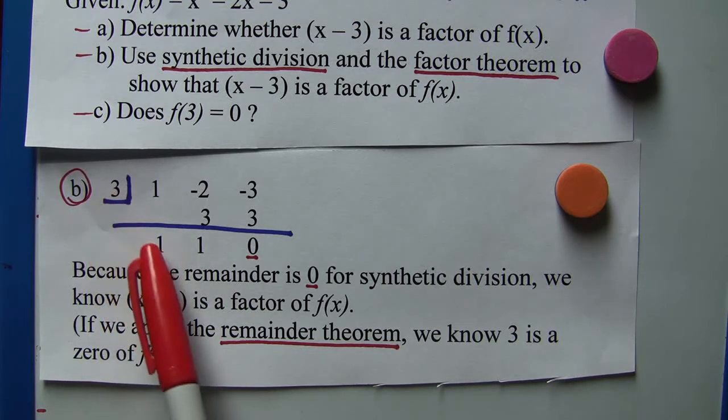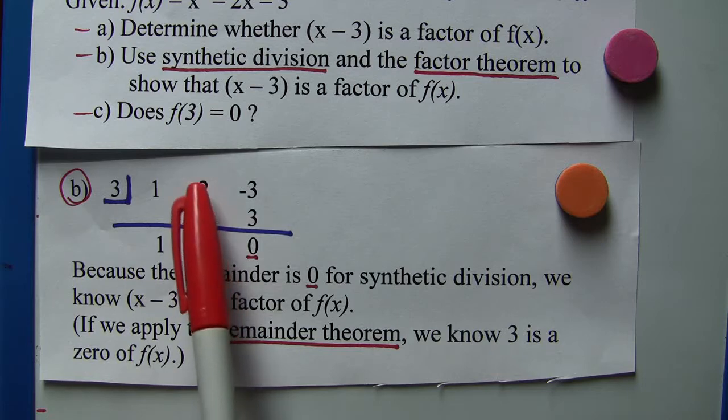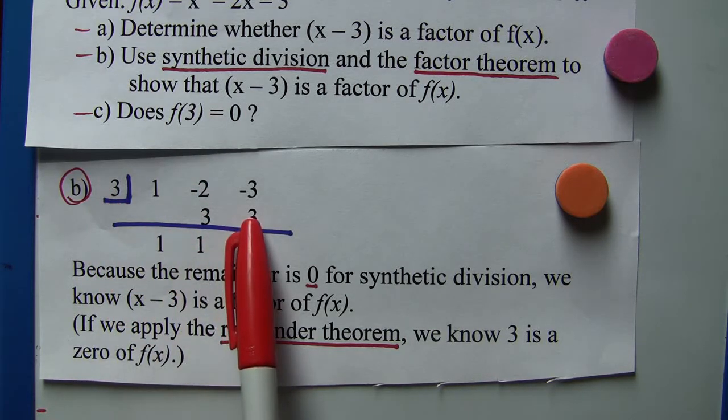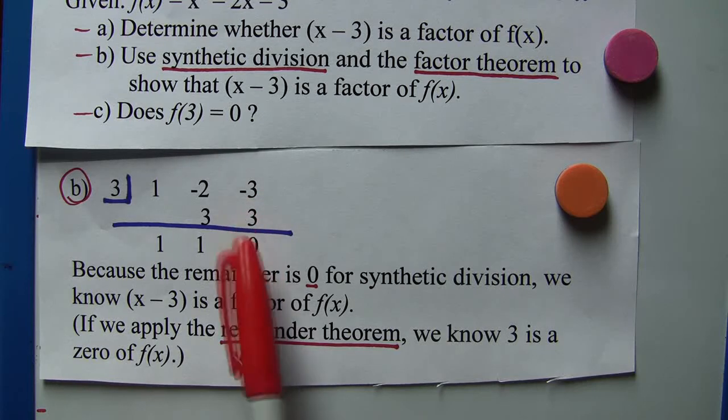And then we do synthetic division. We bring this 1 straight down, then 3 times 1 is 3, so we put a 3 here. -2 plus 3 is 1, 3 times 1 is 3, and then -3 plus 3 is 0.